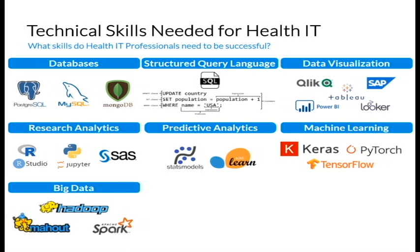Big Data. Big Data finds ways to analyze and systematically extract information from, or otherwise deal with, data sets that are too large or too complex to be dealt with by traditional data processing application software. This data is typically larger, more complex data sets collected from a variety of different data sources involving different data types. Big Data is characterized by the three V's: Volume, which refers to the amount of data being processed; Velocity, which refers to the fast rate at which data is being received; and Variety, which refers to the many types of data that are available.